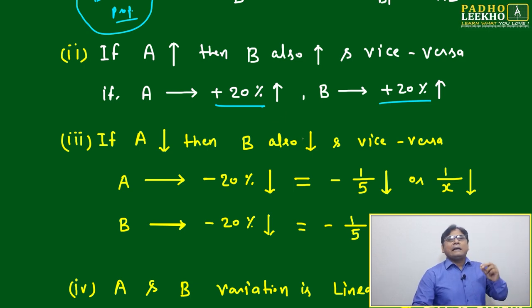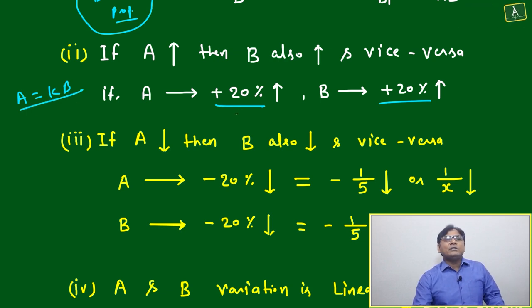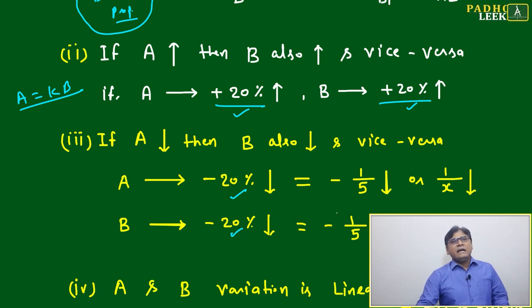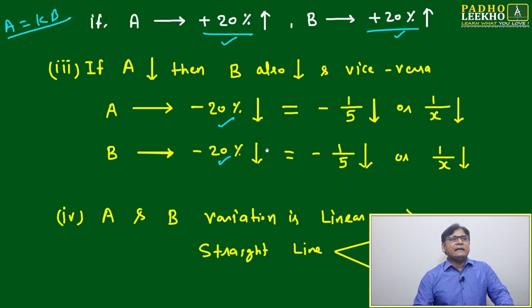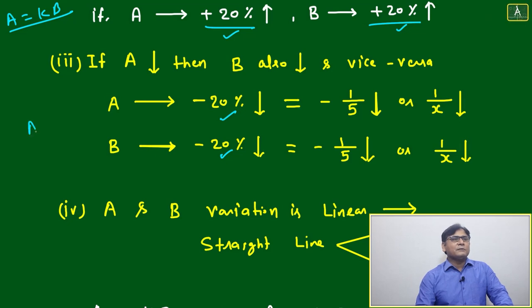We are directly dealing A equal to k B. If A is increasing by 20 percent, B will also increase by 20 percent. If A is decreasing by 20 percent, then B will also decrease by 20 percent.